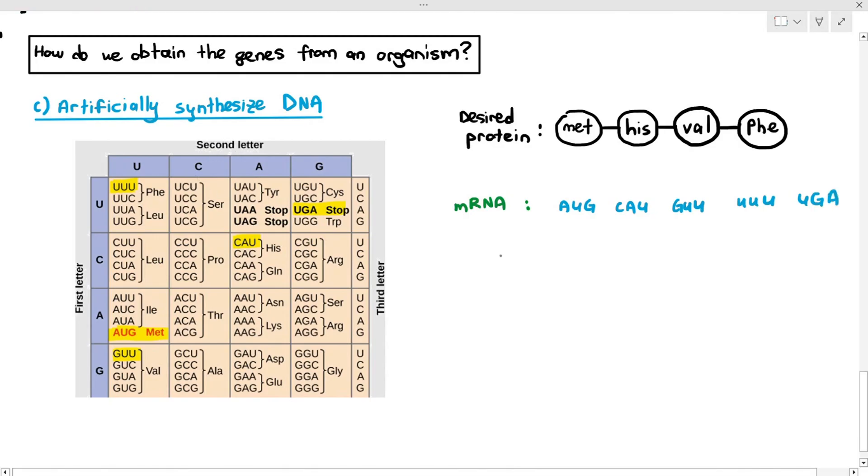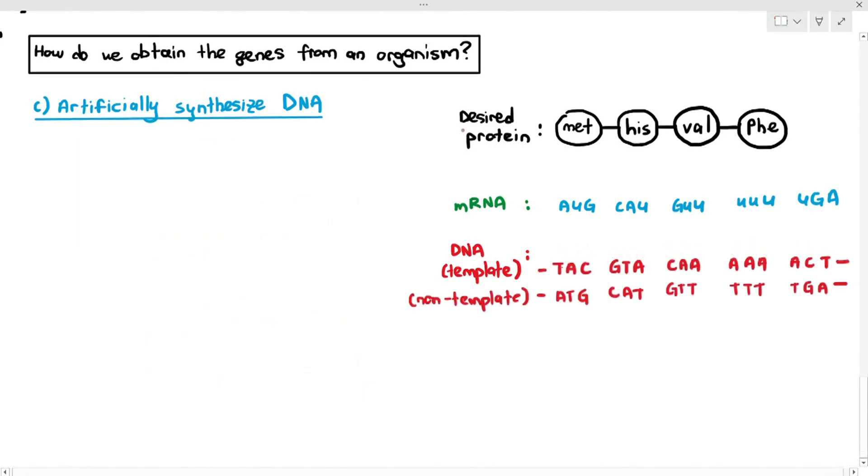Now, to produce that mRNA sequence, we know that the template DNA must be TAC, GTA, CAA, AAA, and ACT, because it's complementary. So, obviously, the non-template-based sequence has to be just the complementary strand to the template, as you can see here. So, this is the DNA sequence, or the gene, which I require to code for that desired protein.